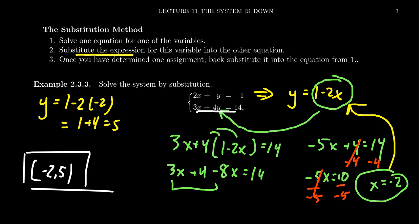Looking at the second equation, 3 times negative 2 is negative 6. 4 times 5 is 20. 20 take away 6 is 14. We found the solution. And this illustrates how one can find the solution of a 2x2 linear system using the substitution method.